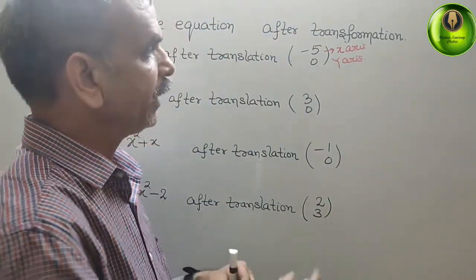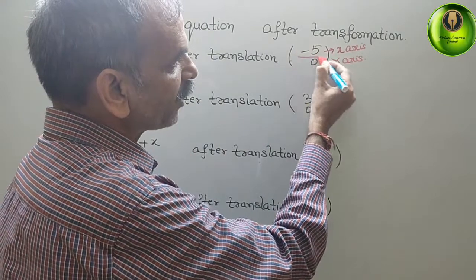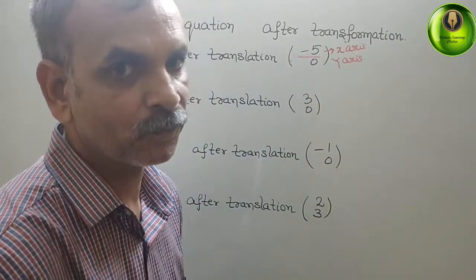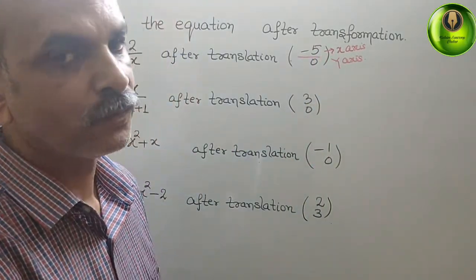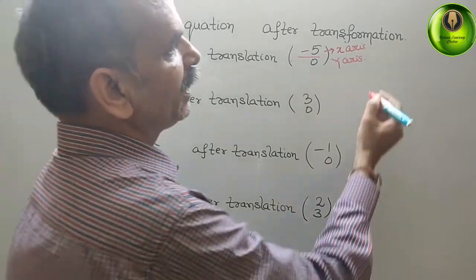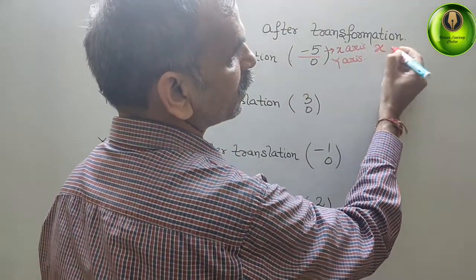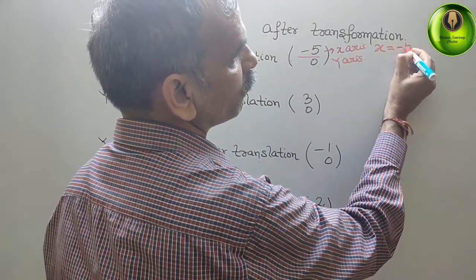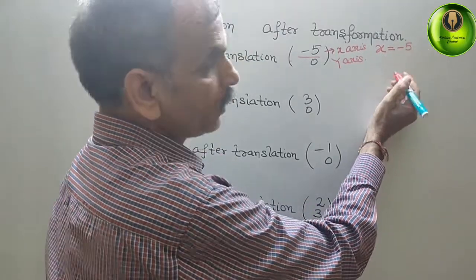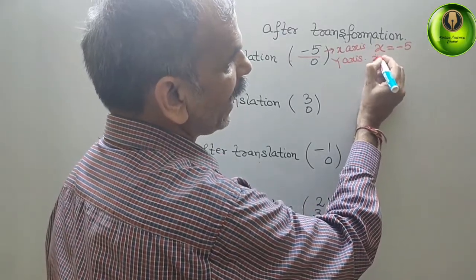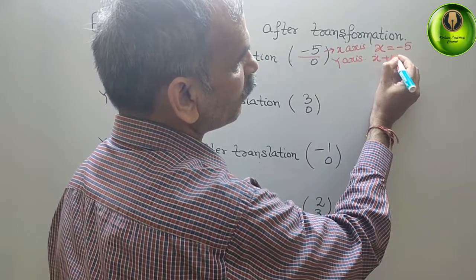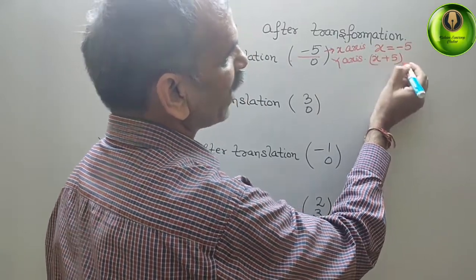Second thing, in x-axis if they have given minus 5, what does it mean? It means that x equals minus 5. That means x plus 5 is now the factor of this.